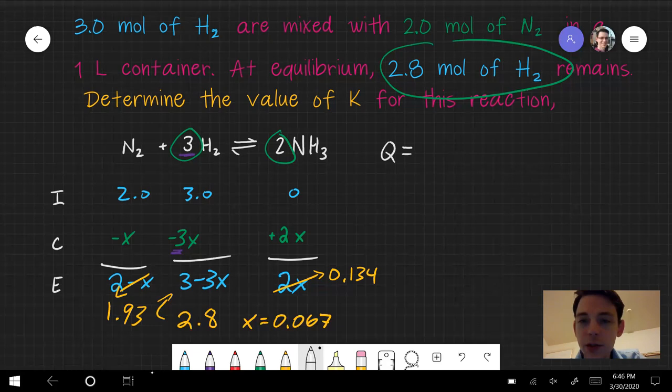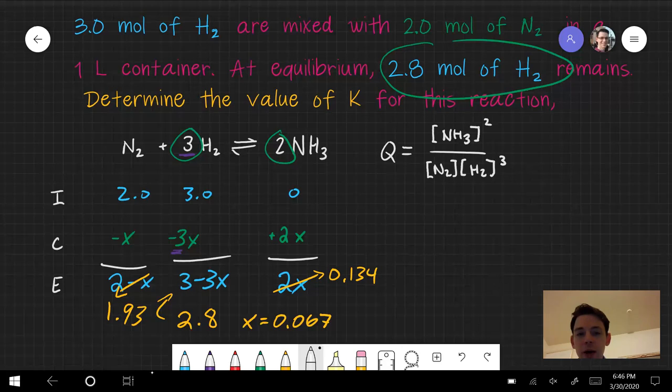Q is equal to the concentration of the products over the reactants raised to the power of their coefficients. So here my product is NH3, and it has a coefficient of 2, so that's going to be squared. My reactants are N2, which has a coefficient of 1, and H2, which has a coefficient of 3, so we're going to have to cube that.